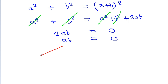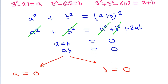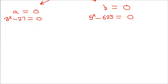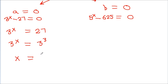From here we get either a equals 0 or b equals 0. Since a = 3 to the power x minus 27 = 0, we get 3 to the power x equals 27, which is 3 cubed, so x equals 3.